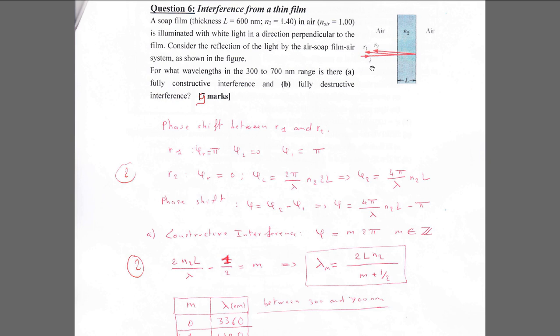For ray 2, traveling through the film of thickness L and back: the phase shift related to the optical path is 2pi over lambda times n2 times 2L. At the film-to-air reflection, since air has a lower index, there is no phase shift upon reflection. So phi_2 is just the optical path contribution.